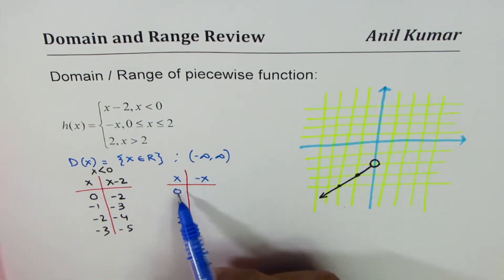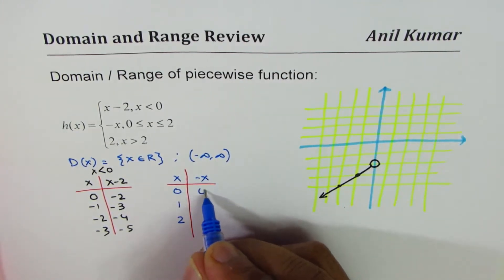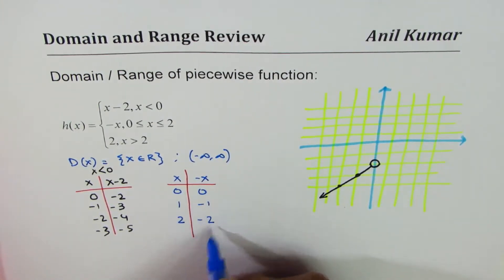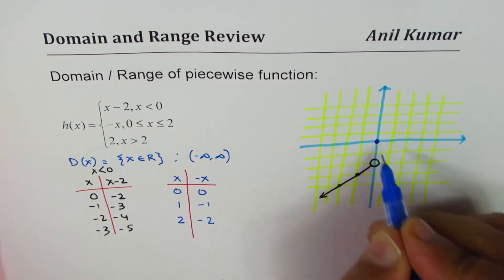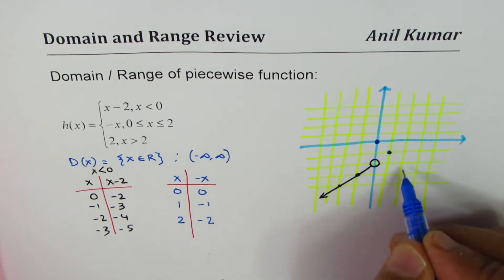Now let's graph the second piece which is minus x for x between 0 and 2. We'll take values of x as 0, 1 and 2. Minus of this: 0 is 0, minus 1, minus 2. Both of them are included, so 0, 0 that's our first value. 1, minus 1 at 1, minus 1 at 2, minus 2, 2, minus 2.